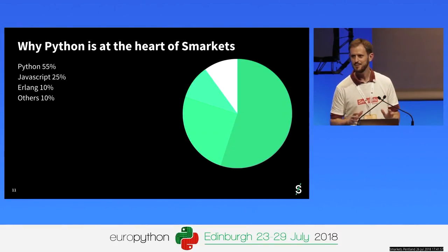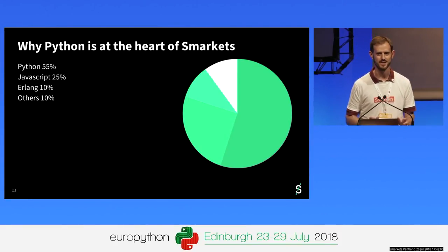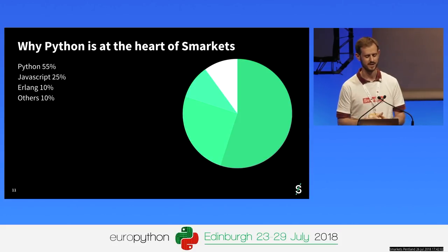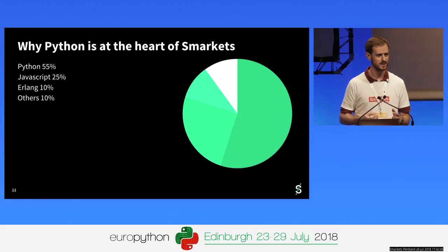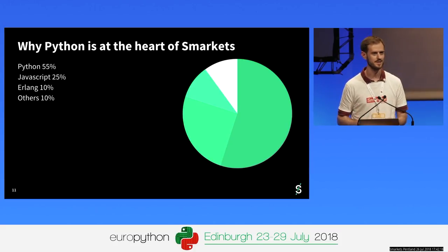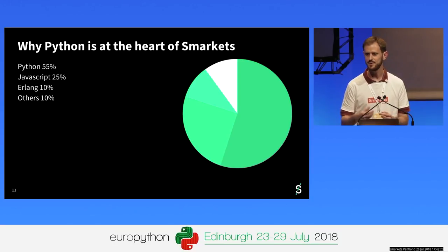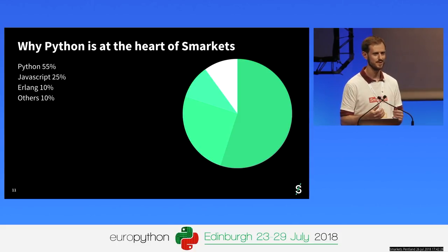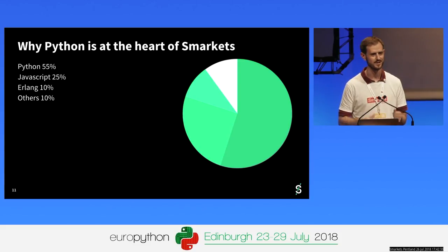The reason we care about Python is that it's the heart of Smarkets. Over two-thirds of our codebase is Python. Our other languages are JavaScript for the front end, and C++ and Erlang for the very latency-critical systems. I'm going to go through some things we've done in Python that we think are interesting — I can only skirt the surface, but if you're interested in any details please come talk to me.